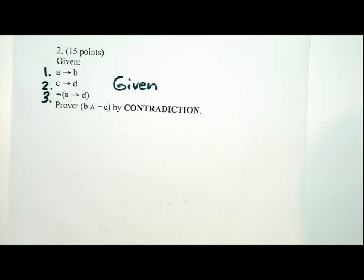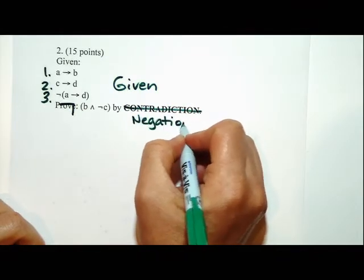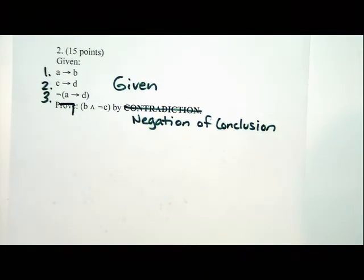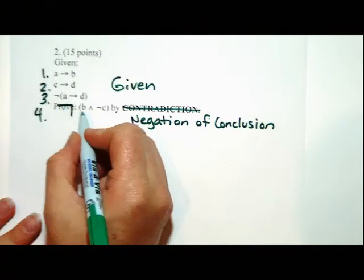If I prove by contradiction, what am I doing? I'm negating the conclusion first. There were a couple of questions on Piazza about whether you were allowed to skip steps on the test or in Novanet. Novanet will let you skip double negation and commutative and sometimes associative, and you can skip all those on the exam as well. So I don't care if you have an extra step for double negation or even say that you did it. So that's line four — not the quantity B and not C.